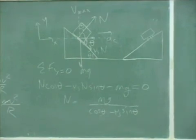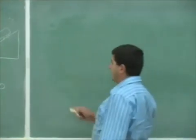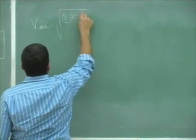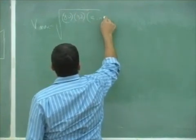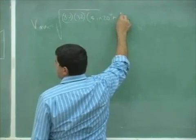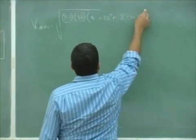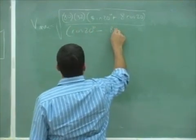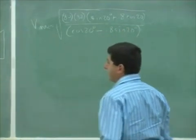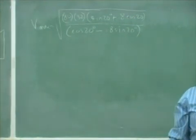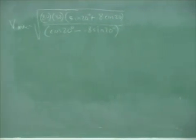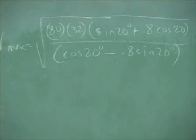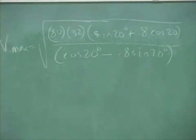Okay, so, let's see here, let's put them in and see what we get. V max is going to equal square root of 80 times 32 times sine of 20 plus 0.8 cosine 20 divided by cosine 20 minus 0.8 sine 20. That's going to tell you what the maximum is that the car can go at.